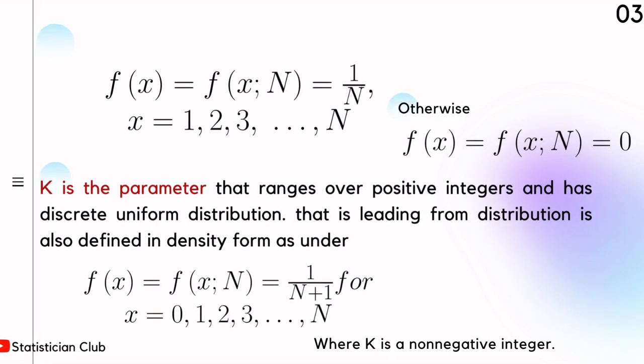If the random variable takes values 1, 2, and so on up to N, then its PDF is f(x) = 1 over capital N. Capital N is the parameter of the distribution, otherwise it takes value 0.